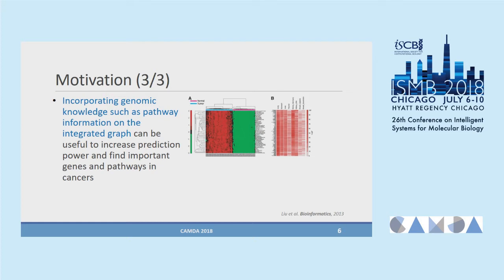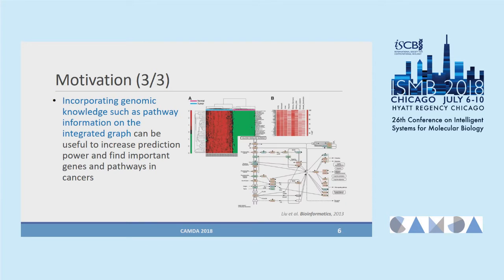In 2013, a directed random walk-based pathway activity inference method was proposed. As shown in the figure, the heat map shows pathway activities differentiating different phenotypes. Based on this pathway activity inference method, topologically important pathways and genes for cancers were identified.